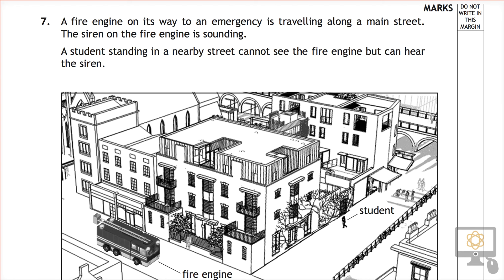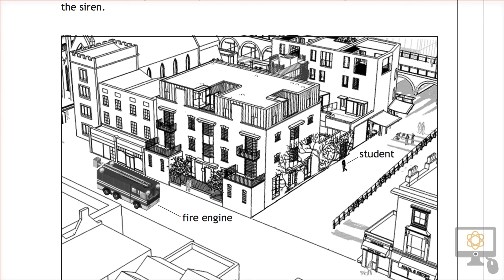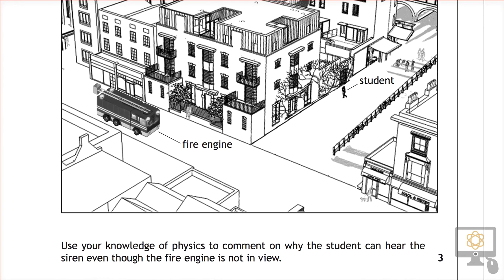Question 7 from the 2014 National 5 Physics paper is one of these open-ended questions worth three marks. It starts with the phrase 'using your knowledge of physics' and there is no set marking scheme for this type of question.